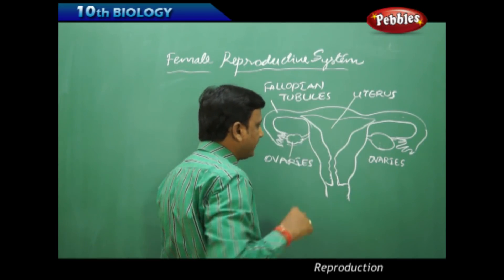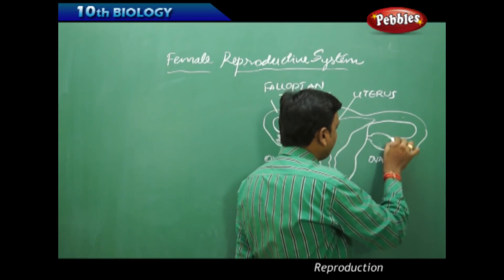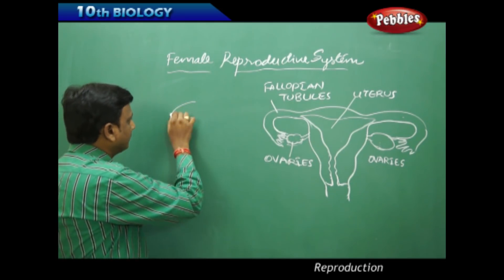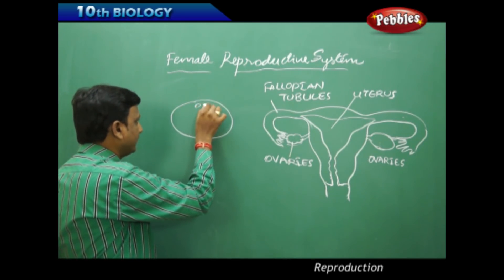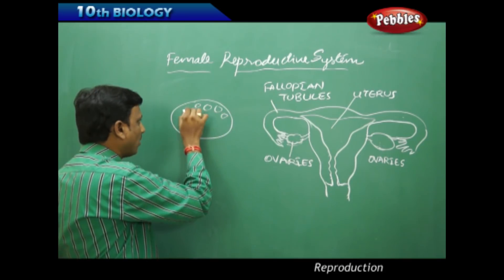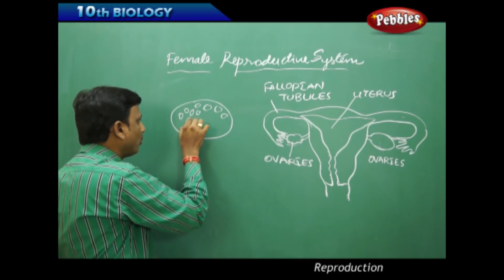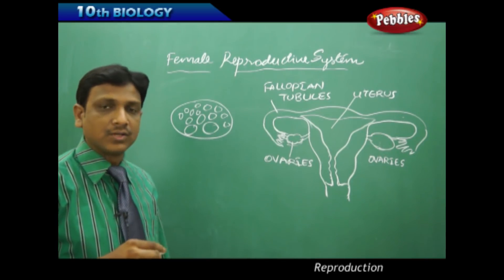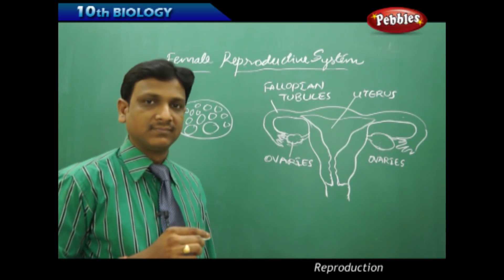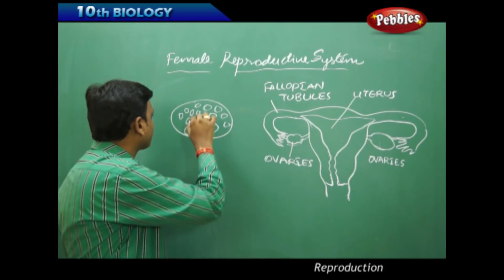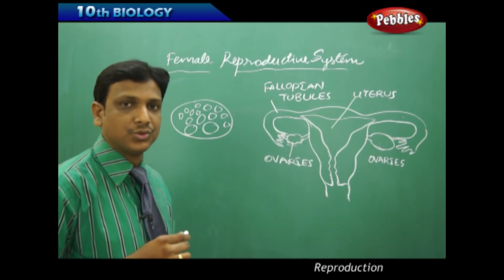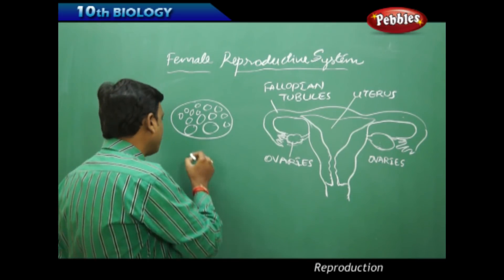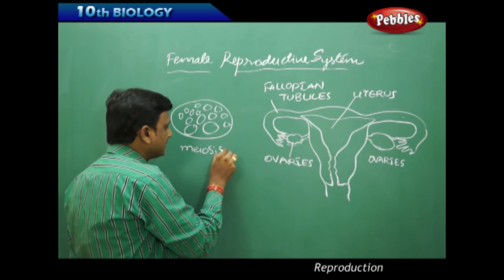The ovary releases the female gametes, which are the ova. If you look at the inner structure of the ovary, inside there are small bubble-like structures floating in some fluid. These are ova — very small bubble-like structures which are not yet matured. These egg cells are formed by cell division called meiosis.